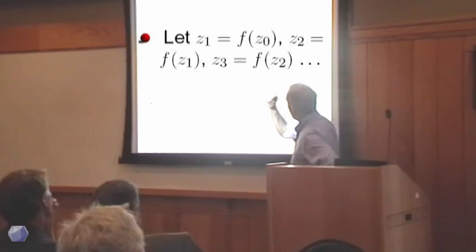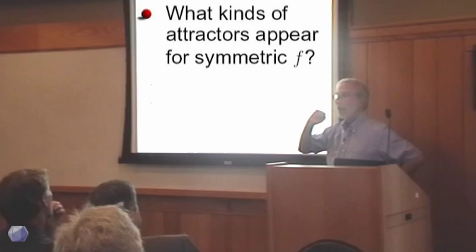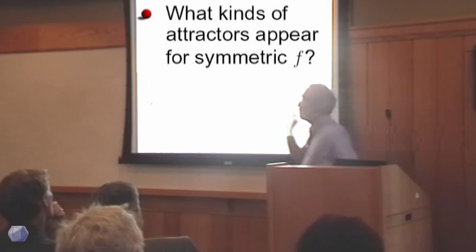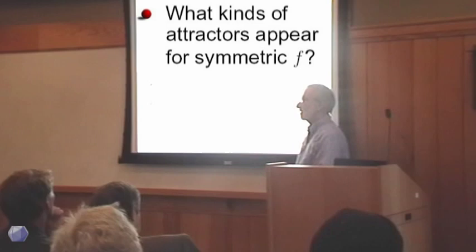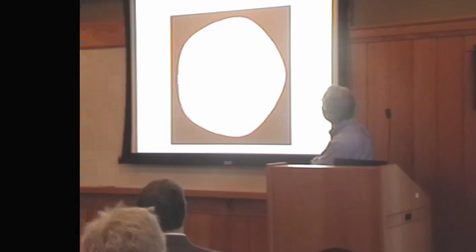And we started saying, what happens if this F has some symmetry? What would you expect to see? The first thing is that there are this notion of attractors. That is, you iterate the mapping, that's what we're doing here, apply F lots of times. On a computer, do a thousand iterates, throw them away, and then plot the next million iterates. And what you see is what's called an attractor.